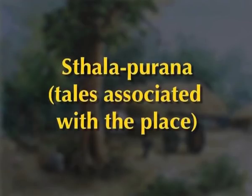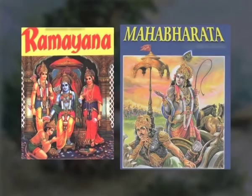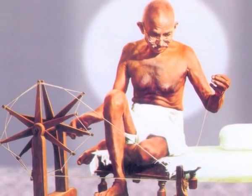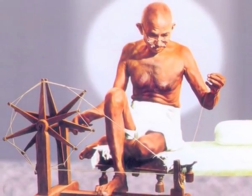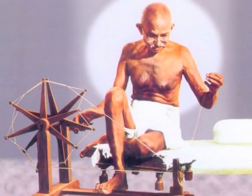Raja Rao states that every Indian village has a Sthalapurana, or tales associated with the place in question. These myths are inexorably linked with mythical characters from the Ramayana, Mahabharata, and other epics. Kanthapura deals with Gandhi, who had become more than just a myth. Raja Rao also speaks about his style of narration — the Indian style.